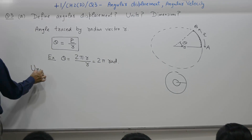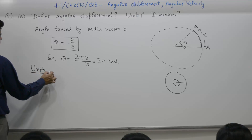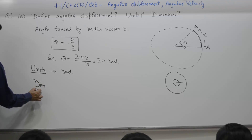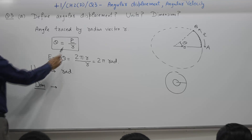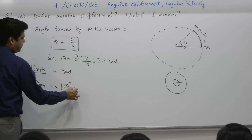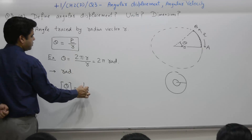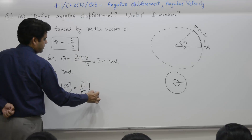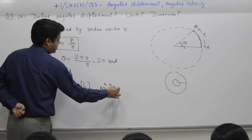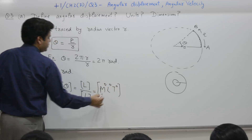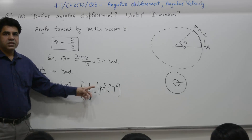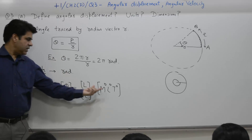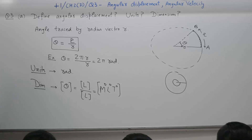The SI unit of angular displacement is radian. For dimensions, angle equals arc length divided by radius, which is length divided by length, giving M0, L0, T0. So angular displacement is a dimensionless parameter, but its SI unit is radian.